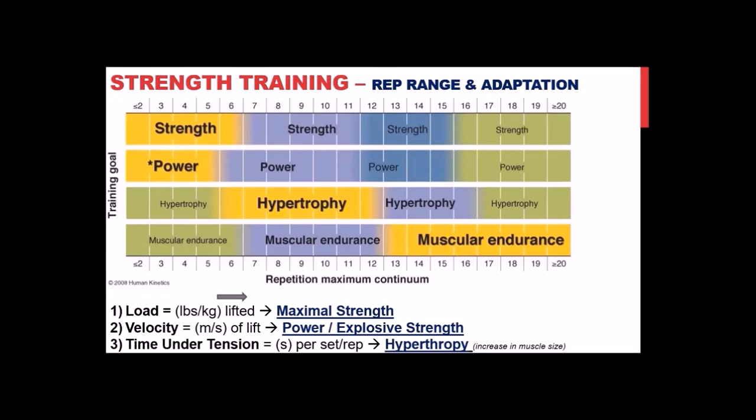For throws, since you're projecting an implement rather than your own body, relative strength isn't as important — absolute strength matters more. That's why hypertrophy is something you might look at for throwers but not really for jumpers, sprinters, hurdlers, or distance runners. Hypertrophy falls in the higher rep range on that chart.